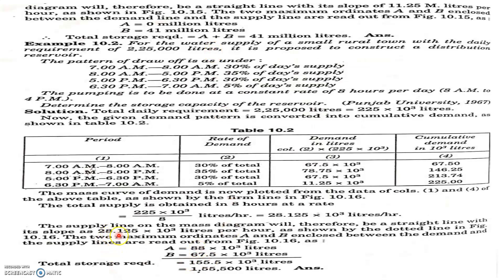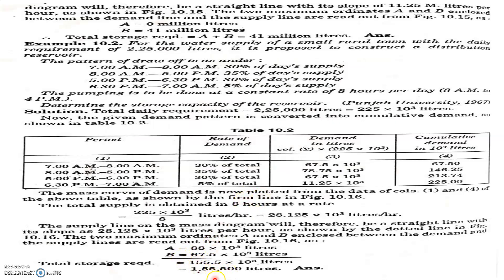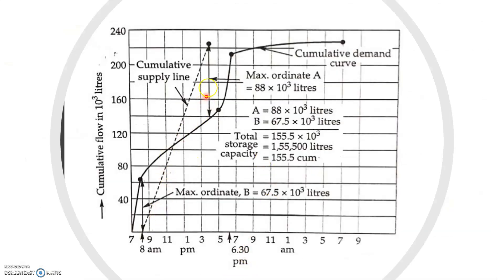A straight line with a slope of 28.125 is drawn for the uniform pump supply over 8 hours. The maximum ordinates are found at two points: point A is approximately 88×10³ liters and point B is approximately 67.5×10³ liters — reading from the graph in increments of 20, giving 60 plus 7.5. Adding A and B together gives the total storage capacity of the reservoir.